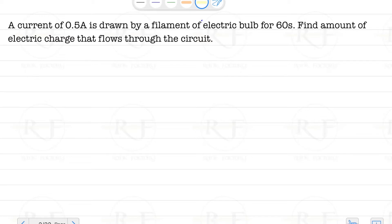find out the important things given in the question. Current is 0.5 ampere, and time is 60 seconds. Amount of charge we need to find. Just remember, we have studied the formula